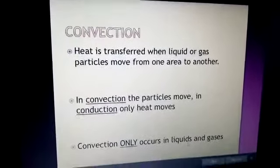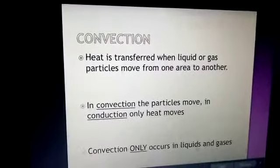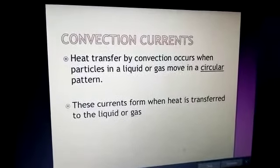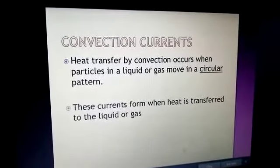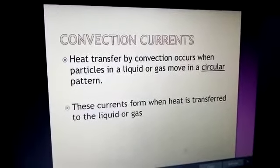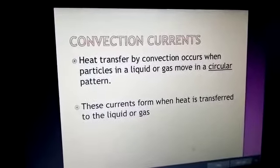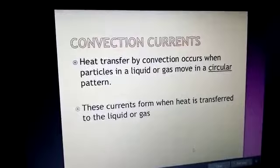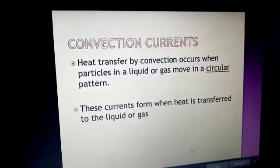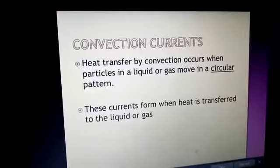Keep in mind that convection never happens in solids — it only occurs in liquids and gases. Heat transfer by convection occurs when particles in a liquid or gas move in a circular pattern. This is the basic phenomenon of convection currents. Convection currents mean something is moving in a circular form or repeating a cyclic process.